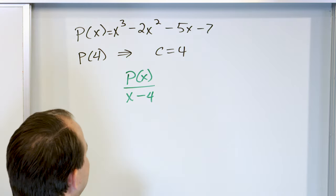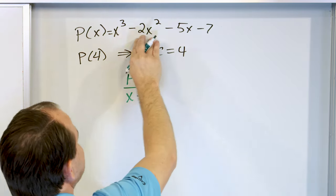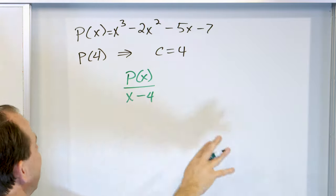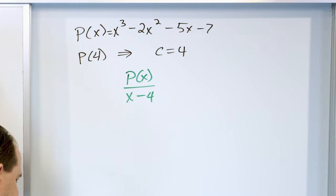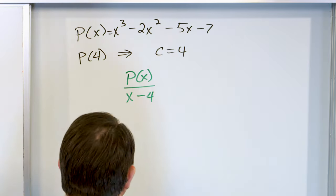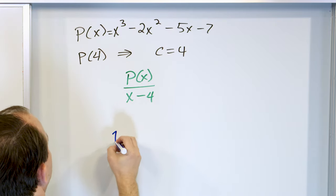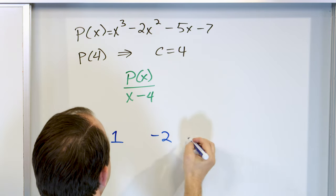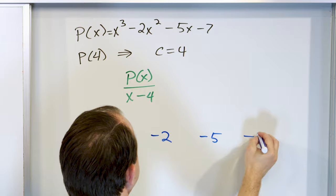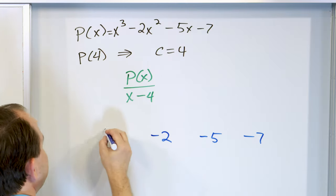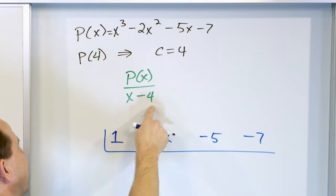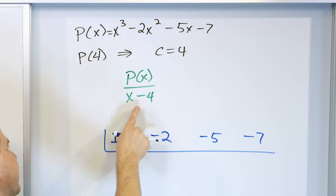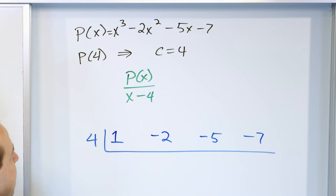So now I want to divide it. I can do long division — I can take this and divide by x minus 4, and that would work fine. But I like synthetic division — it's actually easier to do. So I'm going to do synthetic division: the coefficients are 1, negative 2, negative 5, negative 7, and I'm dividing by x minus 4.